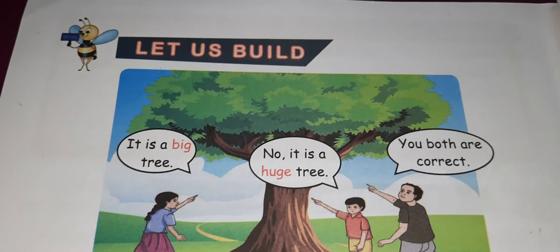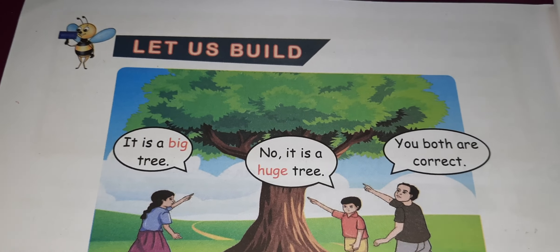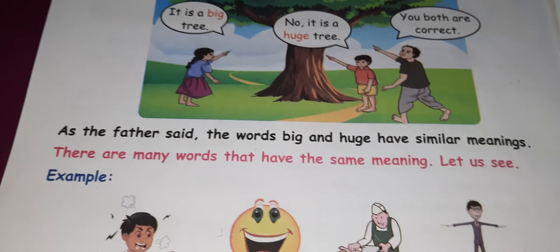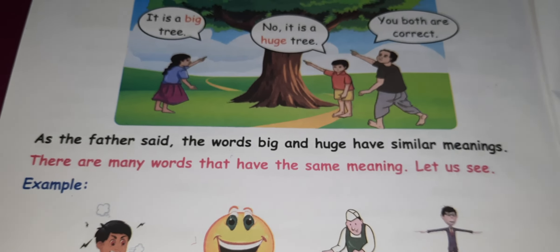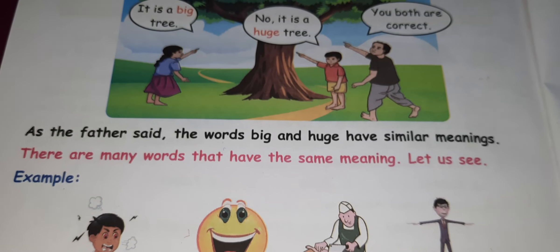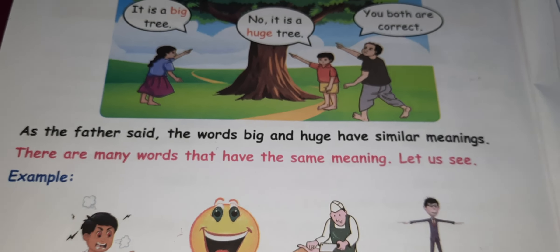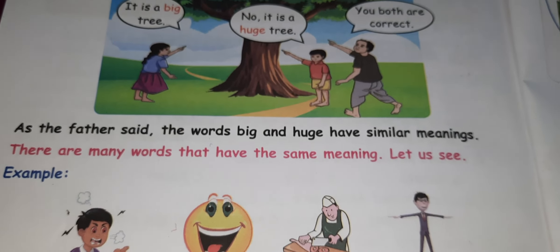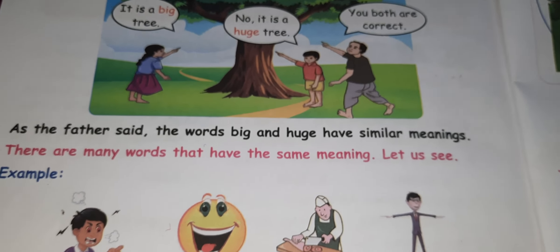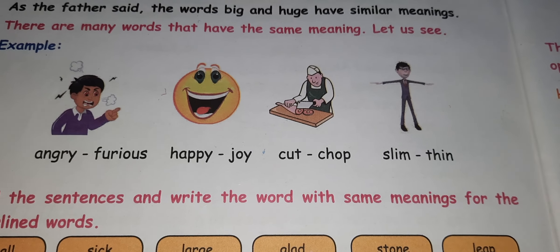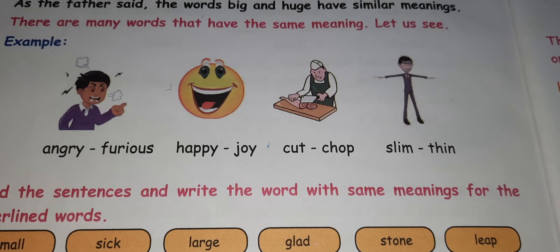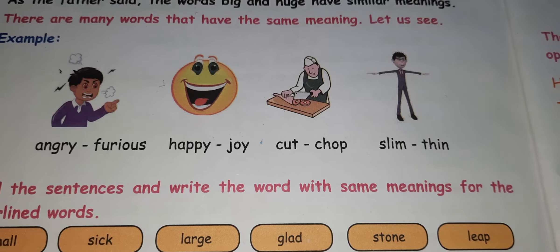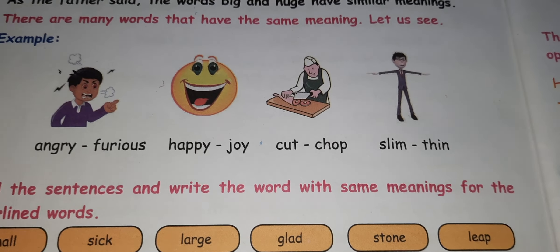Let us build. 'It is a big tree.' 'No, it is a huge tree.' 'You both are correct.' As the father said, the words 'big' and 'huge' have similar meaning. There are many words that have the same meaning. For example: angry — furious, happy — joy, cut — chop, slim — thin.